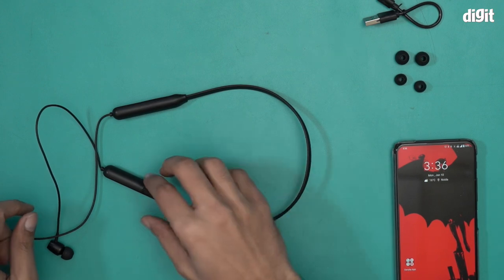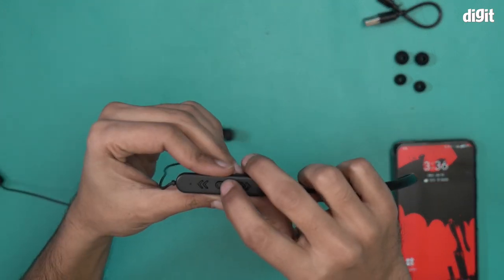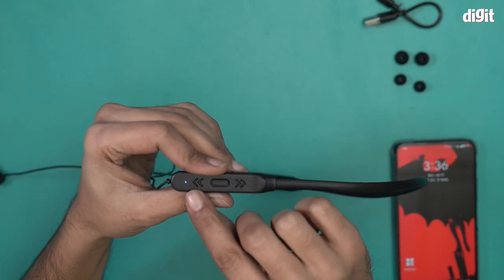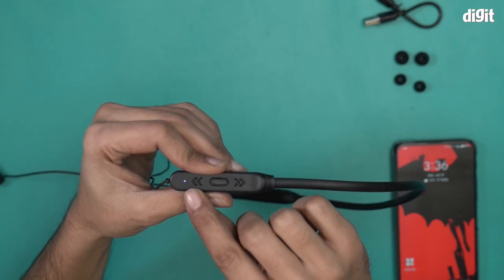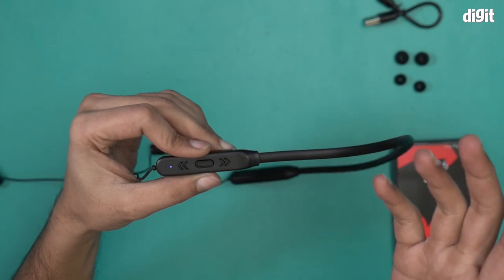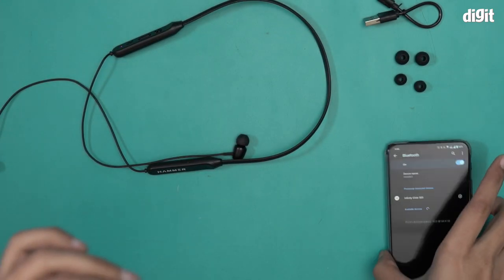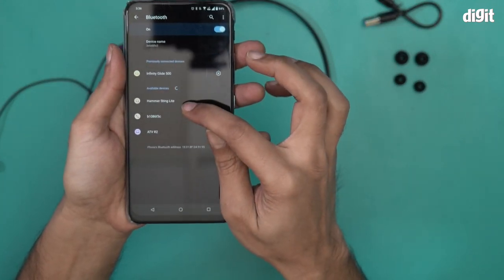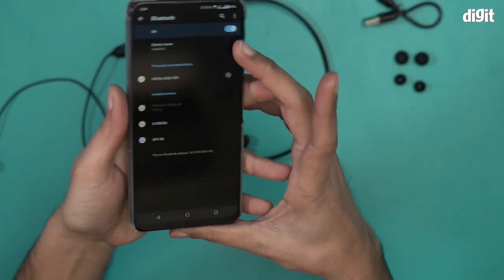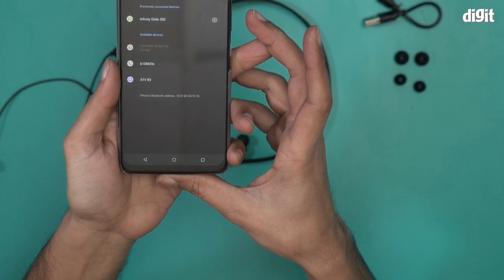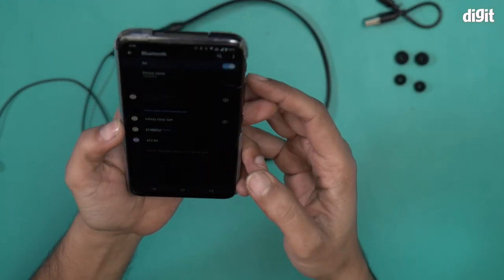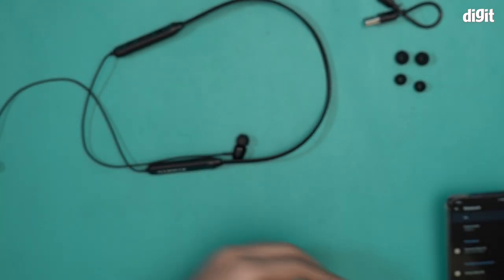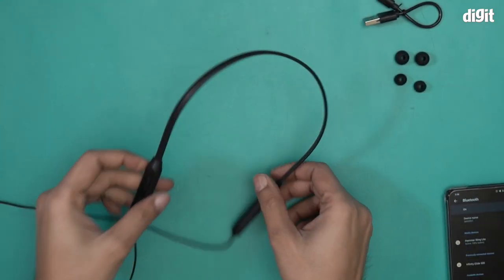You'll notice there's a blue and red LED light blinking over here - this basically means you're now in pairing mode. I will go to the Bluetooth settings page on my phone, and I'm getting a Hammer Sting Light option right over here. Let me click on that. Now I'm going to click on pair. It says 'Active, 100% battery'. I will now listen to this and see what the audio is like.